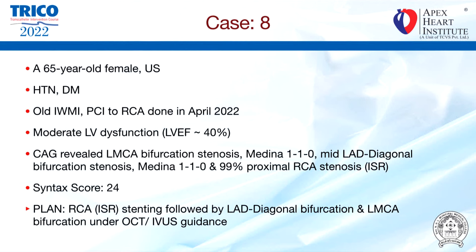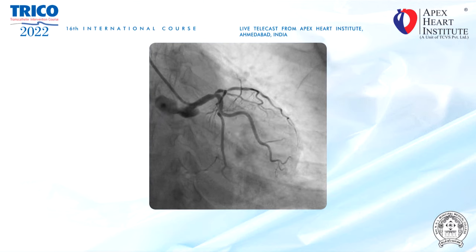For case number 8, we have a 65-year-old female, hypertensive and diabetic. She had an inferior MI in April 2022, at which time PCI to the RCA was done. She has moderate LV dysfunction with EF of 40%. Coronary angiography revealed LMCA bifurcation Medina 1-1-0, mid-LAD diagonal bifurcation Medina 1-1-0, and 99% ISR in proximal RCA, with a SYNTAX score of 24. Today's plan is PCI to ISR RCA, followed by LAD diagonal bifurcation and LMCA bifurcation under OCT and IVUS guidance.